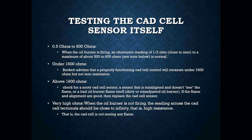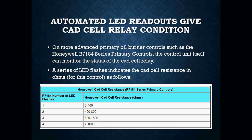If you have a very high ohm reading — preferably infinity — the CAD cell is likely not seeing the light and needs to be cleaned, replaced, or investigated further. Some CAD cell primary controls now feature automated LED readouts. For example, the Honeywell CAD cell R7184 control has an LED flash code: one flash means 0–400 ohms, two flashes means 400–800 ohms, three flashes means 800–1,600 ohms, and four flashes means greater than 1,600 ohms.